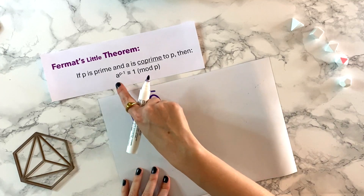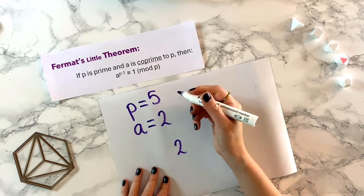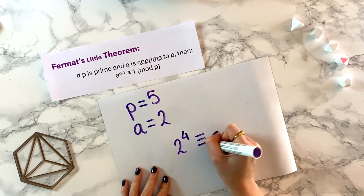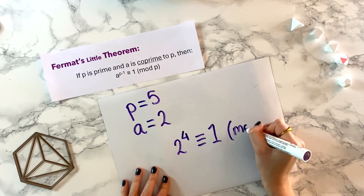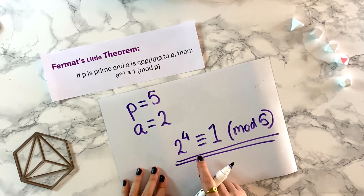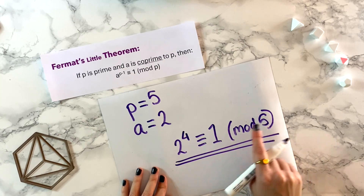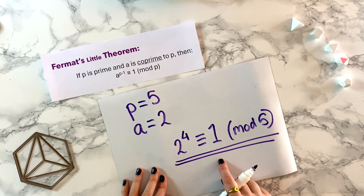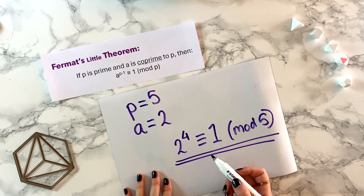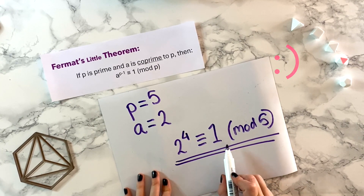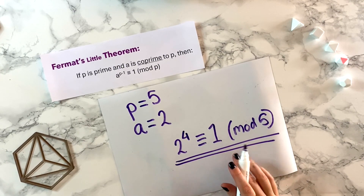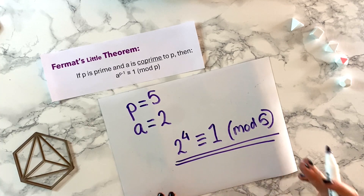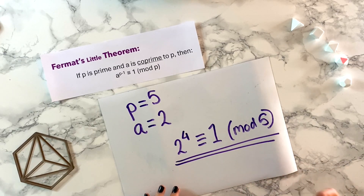In this case, Fermat's Little Theorem would say a — which is two — to the p minus one, so our p is five, meaning p minus one is four, is congruent to one mod p, and p is five. So we've written the statement: two to the power of four is congruent to one mod five. We can verify this quickly — two to the fourth is sixteen, and sixteen is indeed congruent to one modulo five, since five goes into fifteen and sixteen is one more than that.